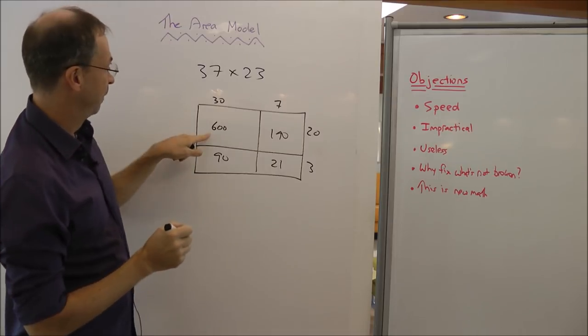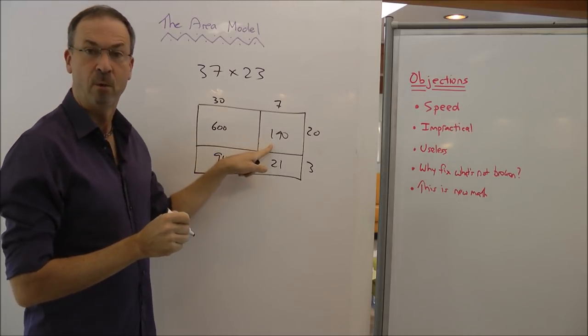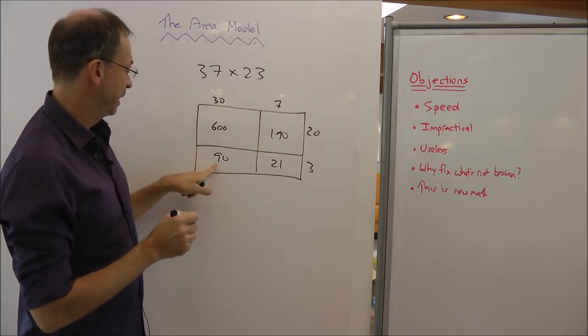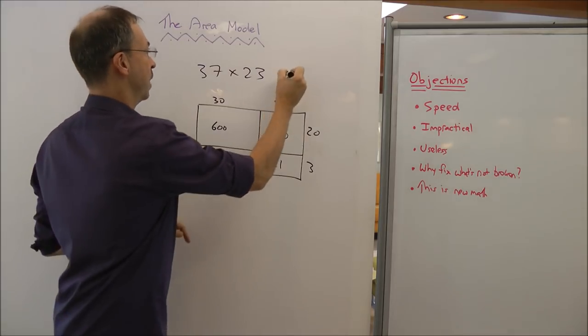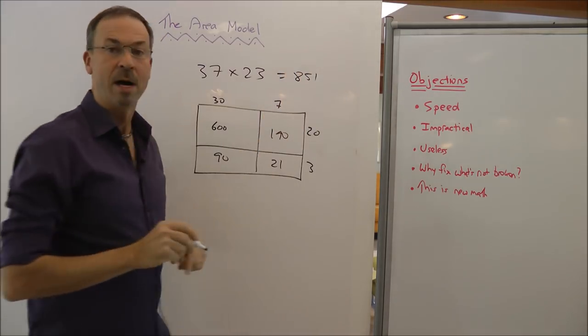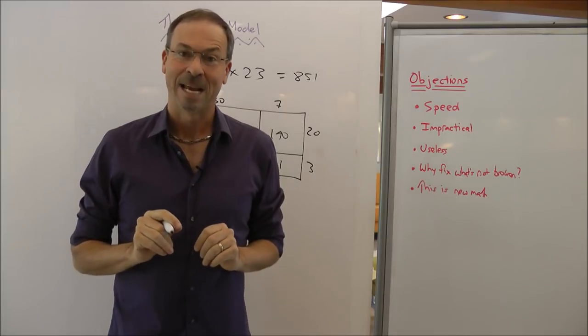So the area of this rectangle must be the sum of these pieces. 600 plus 140, that makes 740, plus 90 makes 830, plus 21 makes 851. This must be 851. Beautiful. That's the area model.